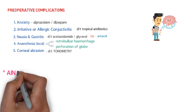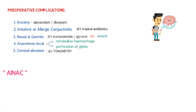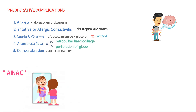To remember preoperative complications, use the mnemonic AYNAK, a Hindi term meaning mirror. A for anxiety, I for irritability or allergic conjunctivitis, N for nausea and gastritis, A for anesthesia (local anesthesia), and K for corneal aberration.